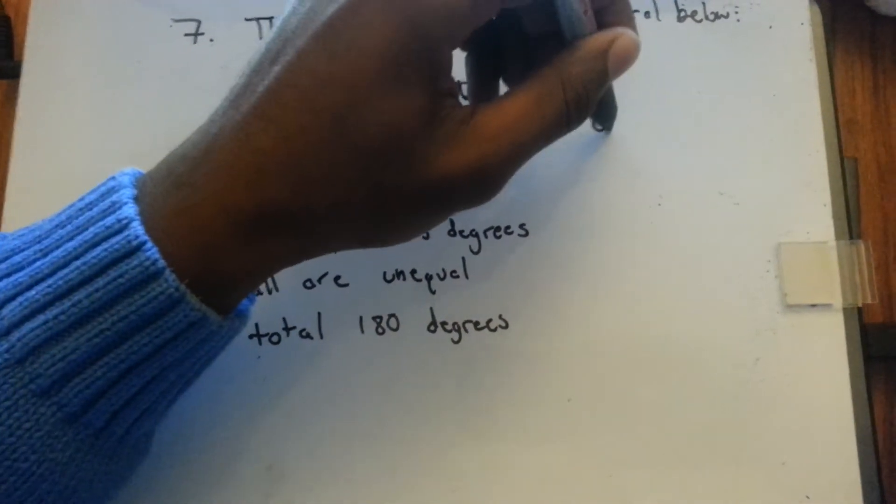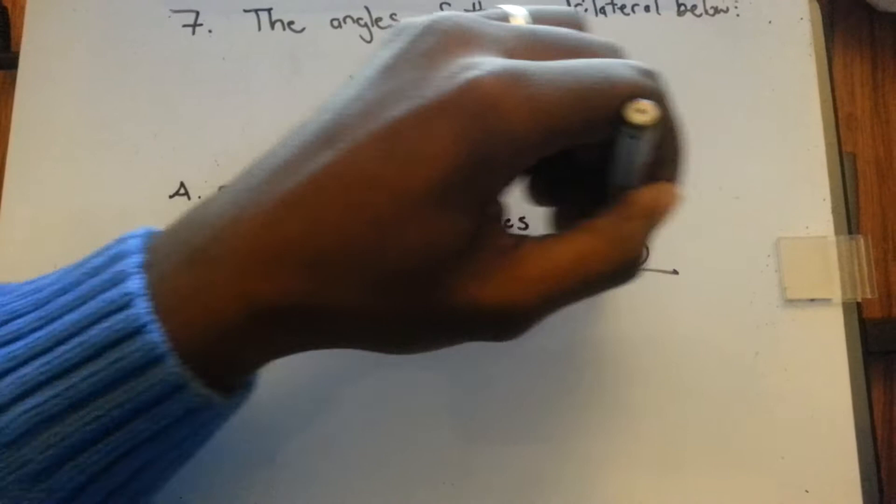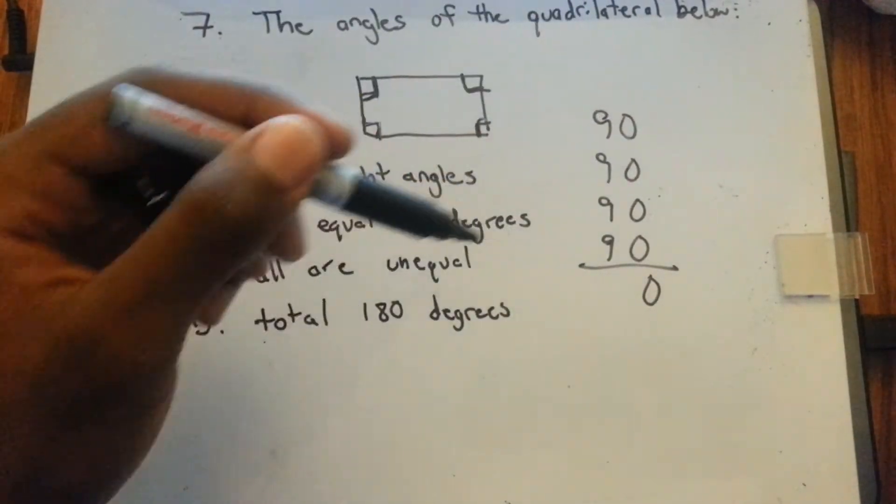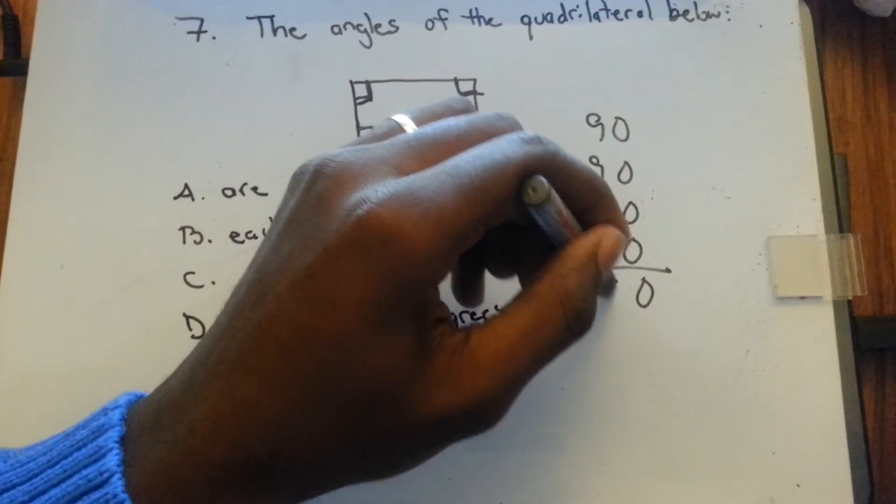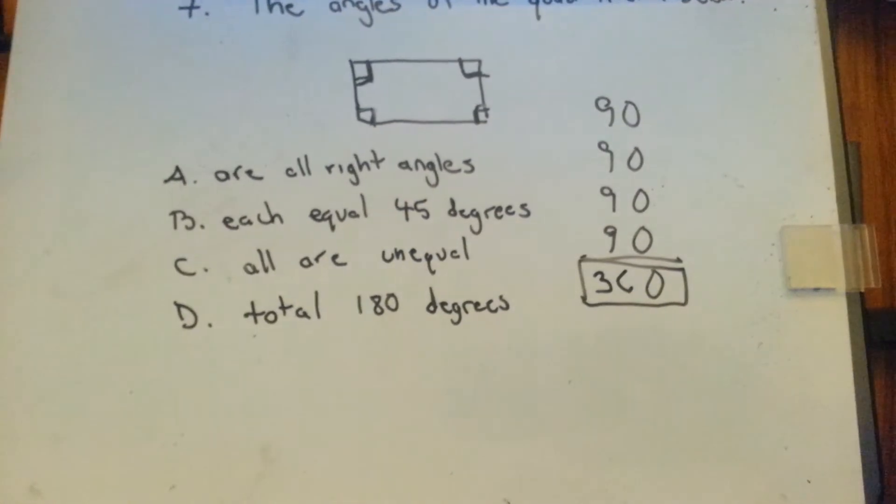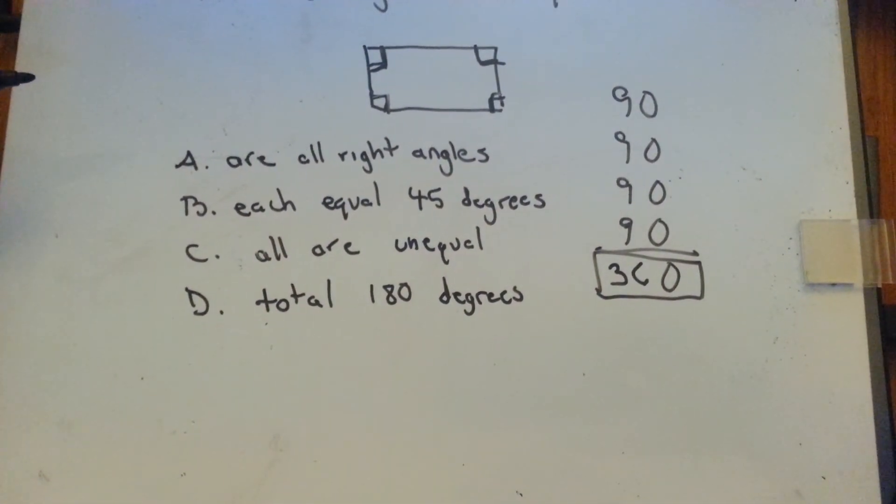90, 90, 90, 90. Zero, one, two, three, four. Four times nine is 36, so 360. 360 degrees inside the quadrilateral.